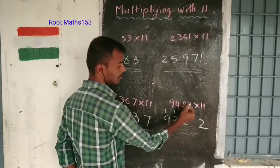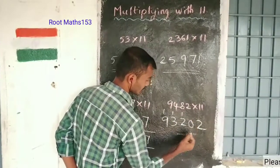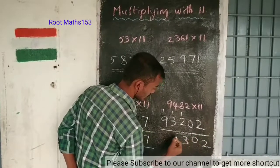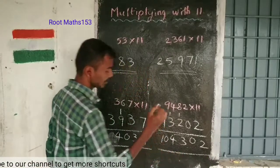so write 2 and carry 1. Then 8 plus 2 is 10, so write 0 and carry 1. With the final carry, our answer is 104302. This is the answer.